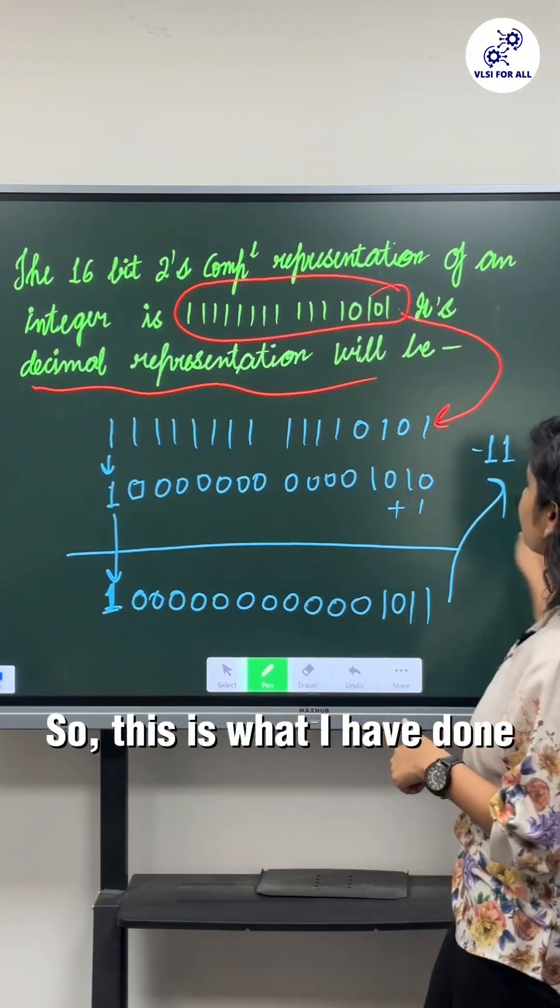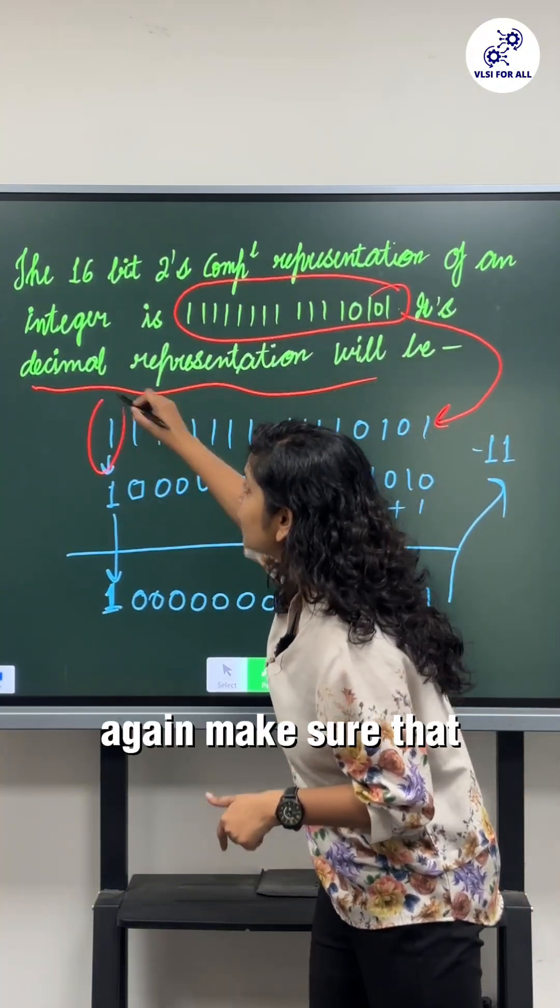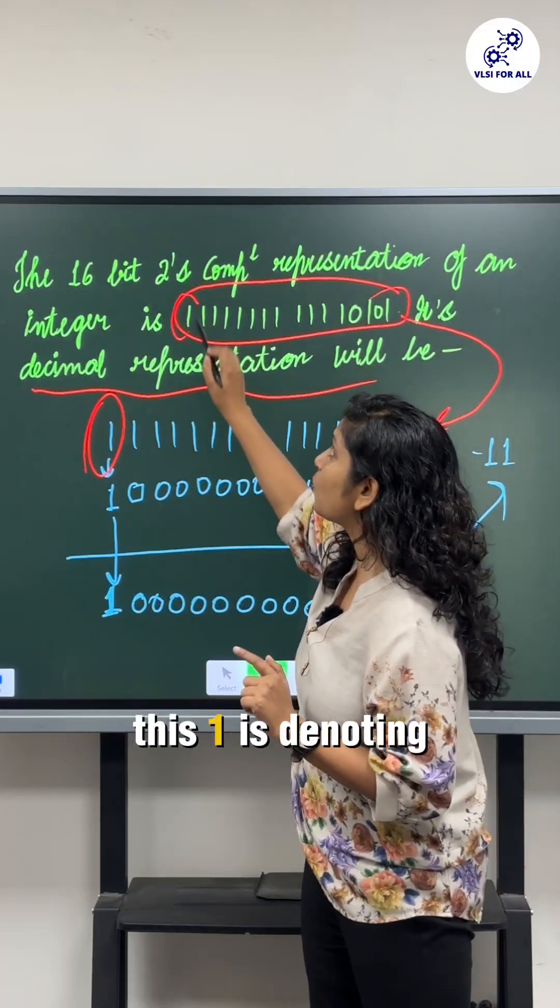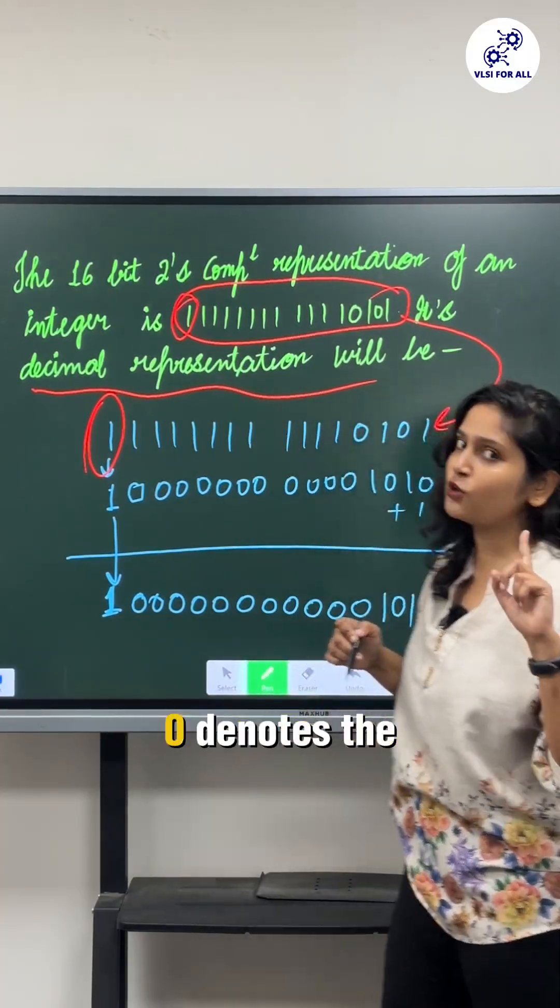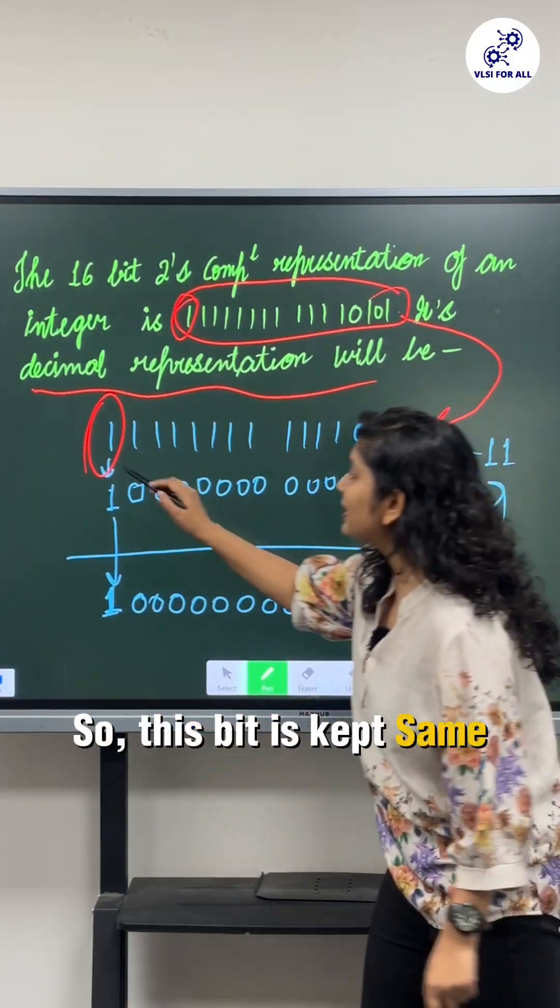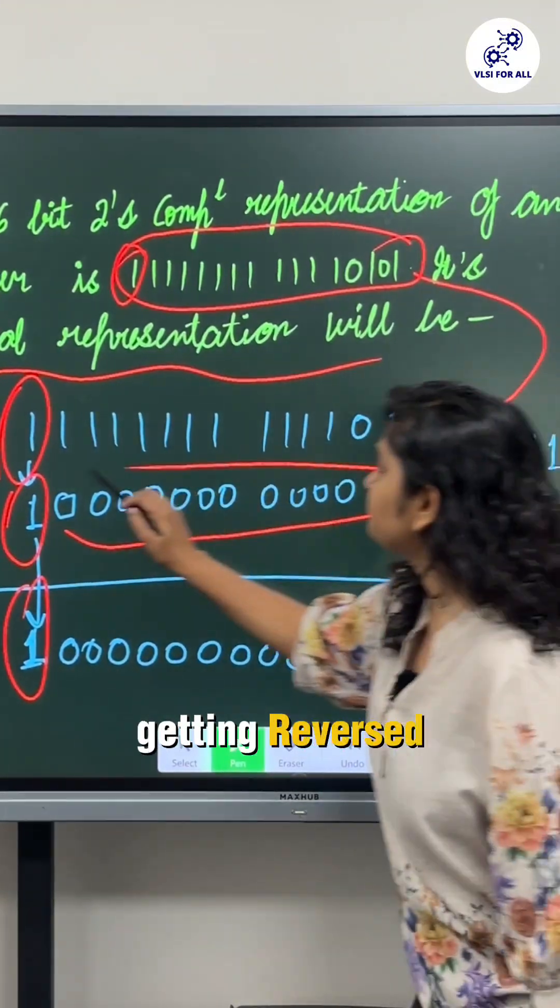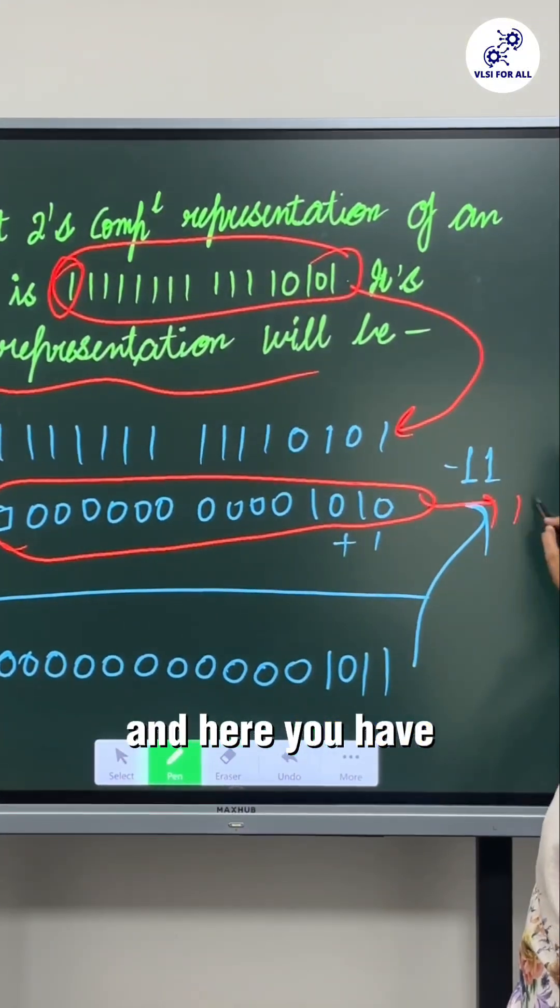So this is what I have done, but again make sure that you do not change the sign bit, okay? Since it's a negative number, this one is denoting the negative number; zero denotes the positive number. So this bit is kept the same and rest all the bits are getting reversed. And here you have found out the one's complement.